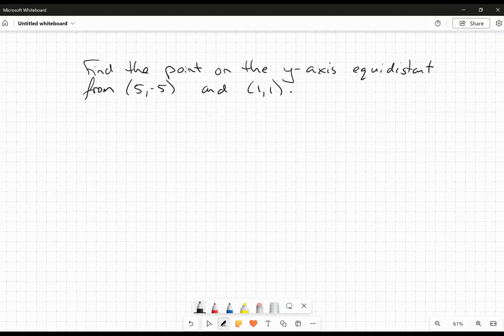Okay, hi everybody. In this video, we're going to do a quick little look at some coordinate geometry. We're going to find the point on the y-axis that is equidistant from the point 5, negative 5, and 1, 1.